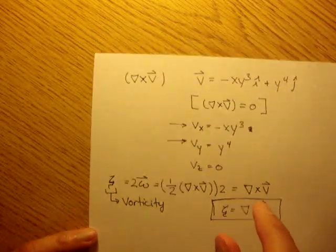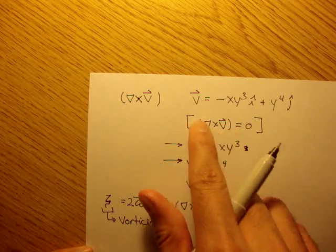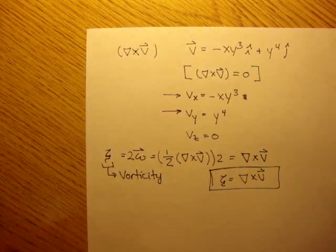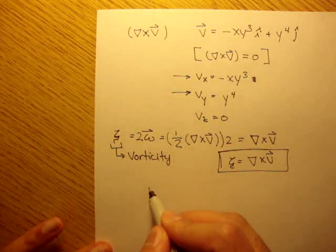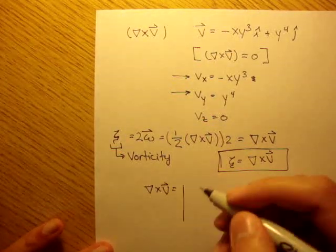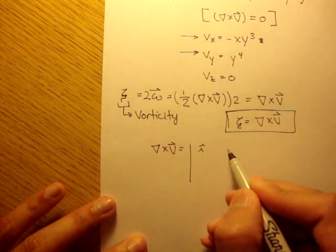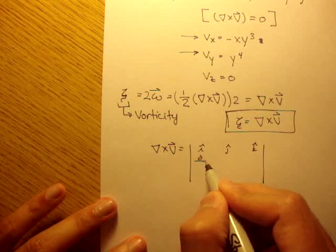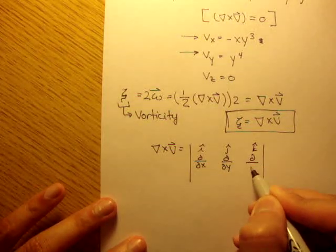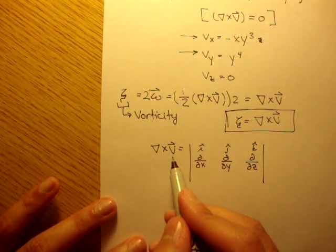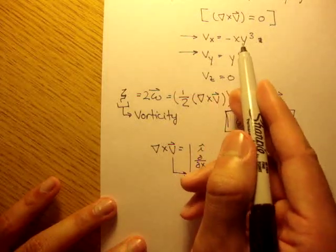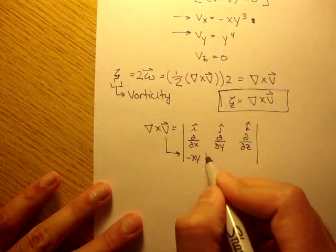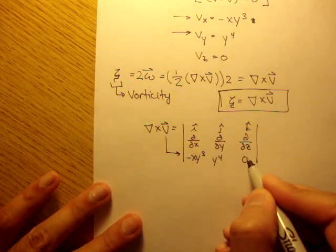So let's find out if del cross v equals zero. We set up del cross v as a determinant with unit vectors i, j, k in the first row. The second row has the partial derivatives with respect to x, y, and z. The third row has the velocity components: negative x·y³ in i, y⁴ in j, and zero in k.